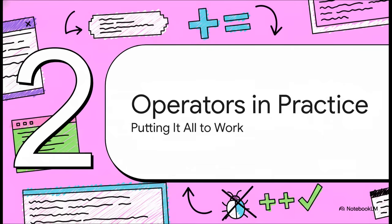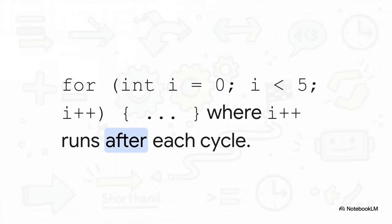Getting this distinction down is absolutely critical for controlling how your programs flow. So where does all this theory actually get used? Well, the single most common place you are going to see the postfix increment operator is as the engine that drives a for loop. Take a look at this totally standard for loop. We start i at zero. We tell it to run as long as i is less than five. And the key piece is that third part, i plus plus.